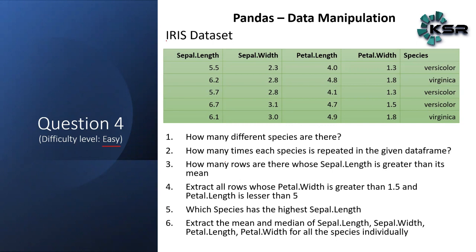The example we're using is the Iris dataset. These are sample records that have sepal length, sepal width, petal length, petal width, and species. The first question is: how many different species are there?